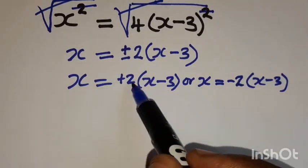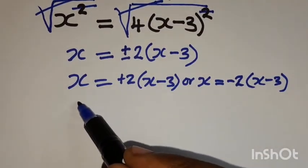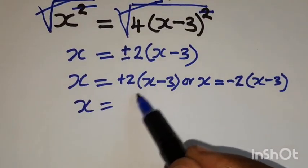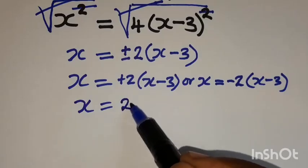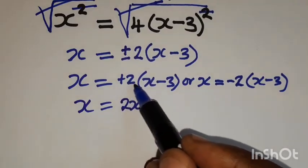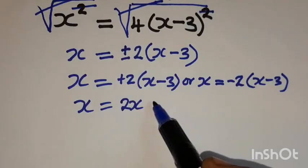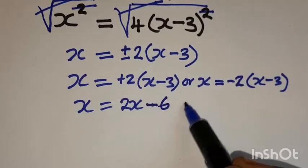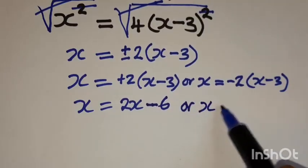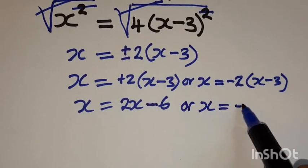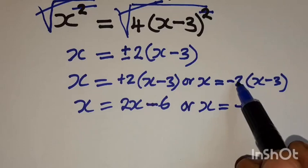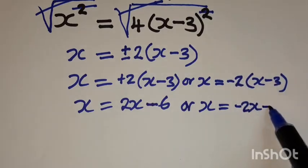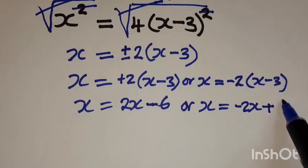Alright, at this stage, we expand and simplify the brackets. So we're going to have x is equal to positive 2 times x would be 2x. Then positive 2 times negative 3 is negative 6. Or x is equal to negative 2 times x is negative 2x. Then negative 2 times negative 3 is positive 6.